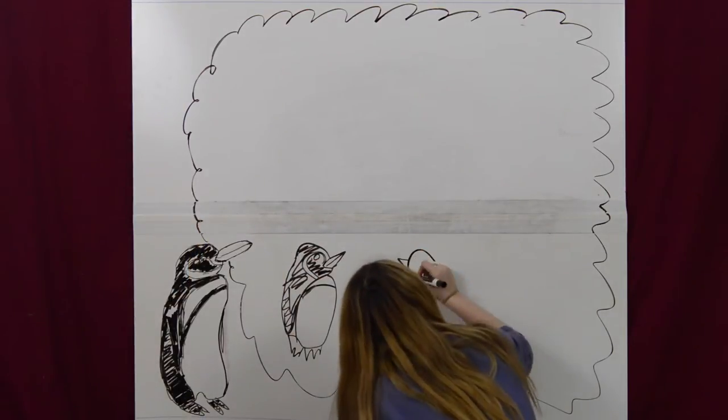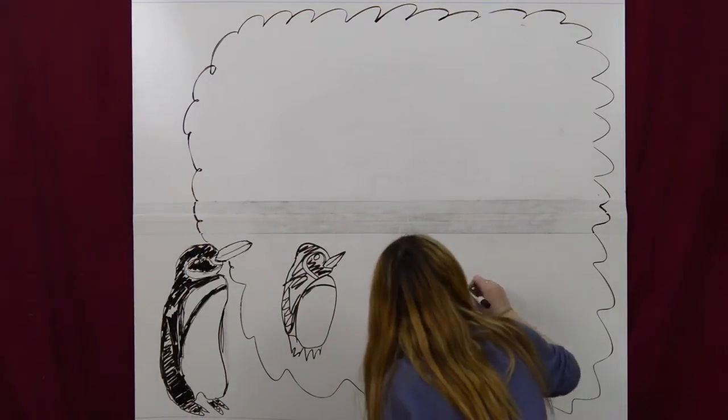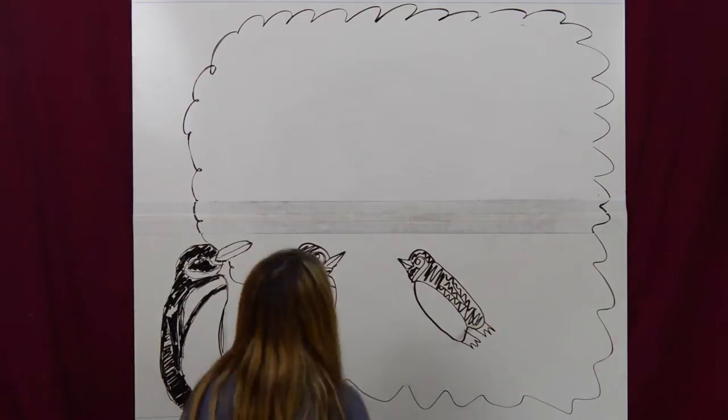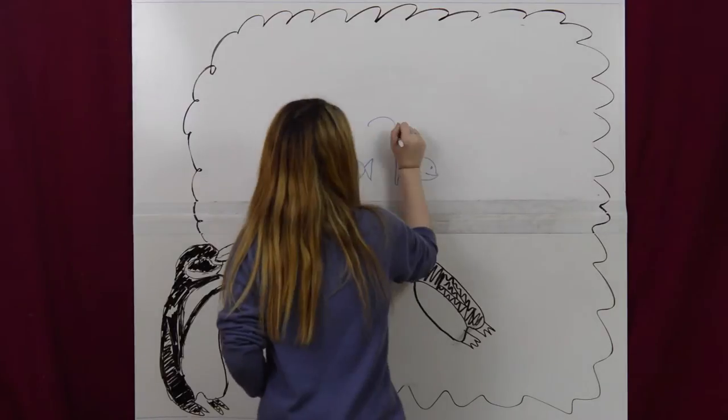Galapagos penguins usually hunt in groups and capture small prey by grabbing them from below. The position of their eyes in relation to the beak means they see their prey best from a position below the prey.